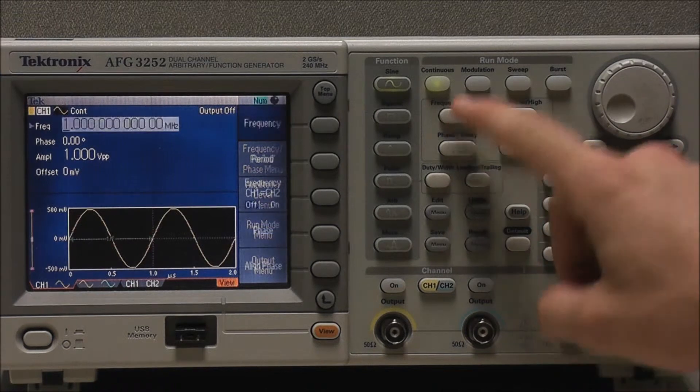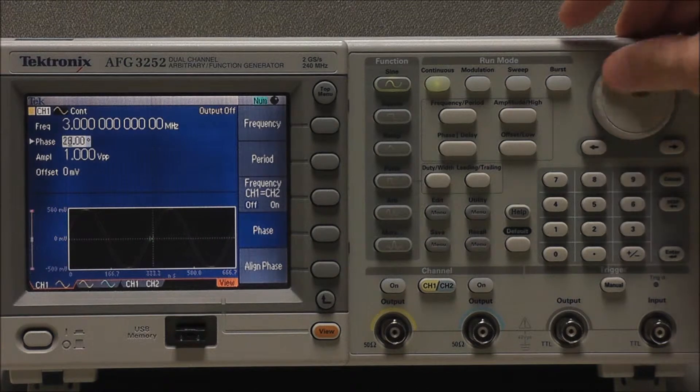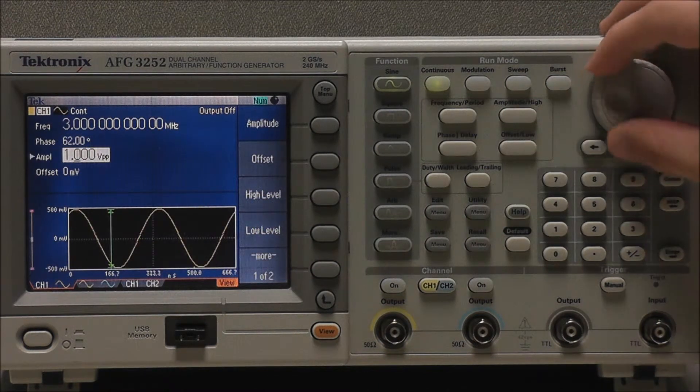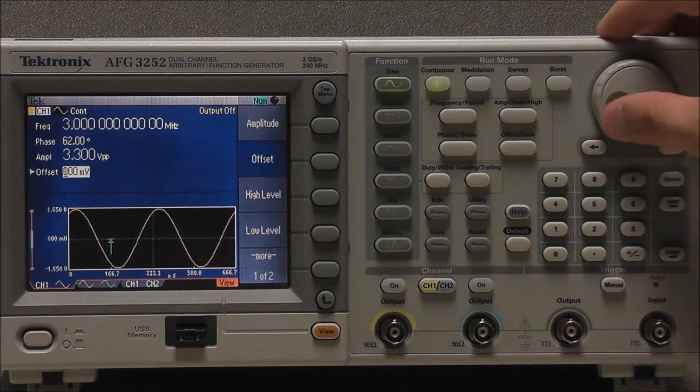So let's just change a few things like our frequency to say 3 MHz, our phase to anything non-zero, our amplitude to 3.3 volts, and our offset again just to anything non-zero.